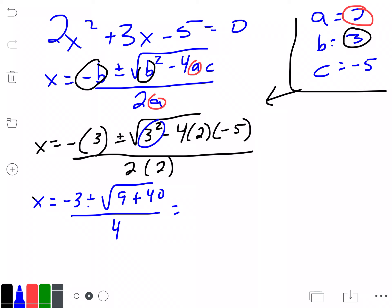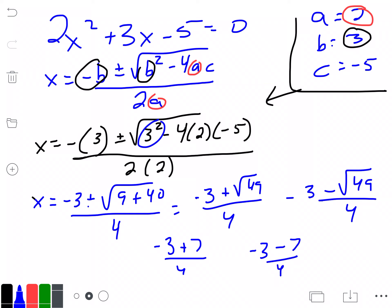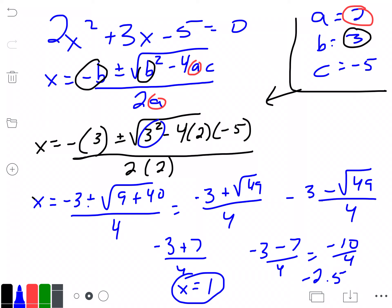So this gives us 9 plus 40, which is 49. That's negative 3 plus or minus the square root of 49, divided by 4. We know the square root of 49 is 7. So negative 3 plus 7 divided by 4: negative 3 plus 7 is positive 4, divided by 4 equals 1. That's one answer. For the minus: negative 3 minus 7 is negative 10, giving negative 10 over 4, which is negative 2.5 or negative 5 over 2.